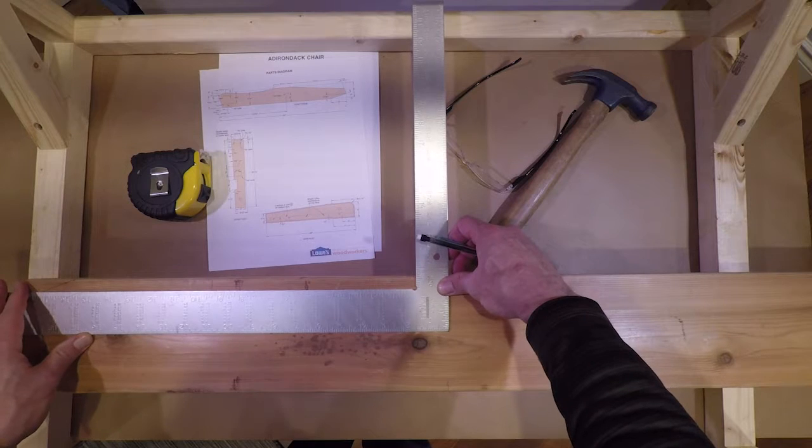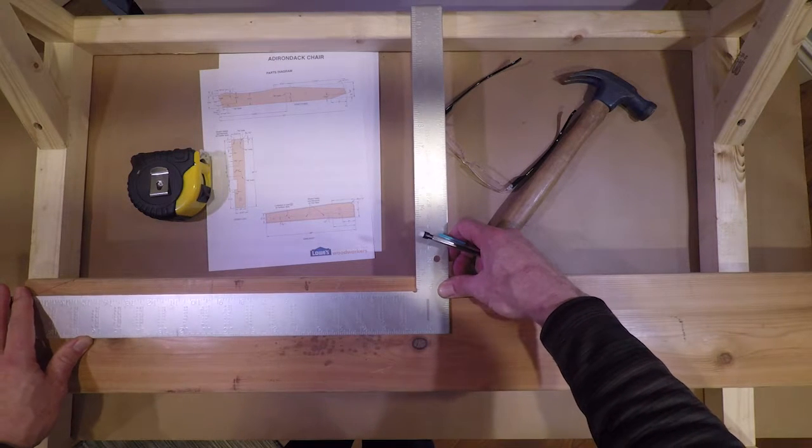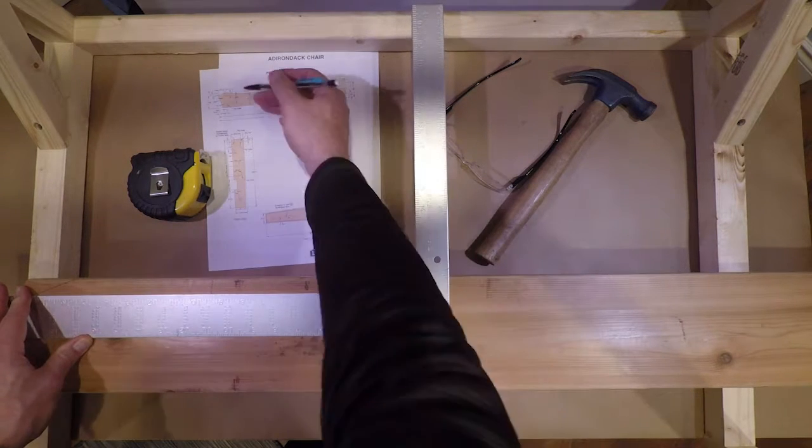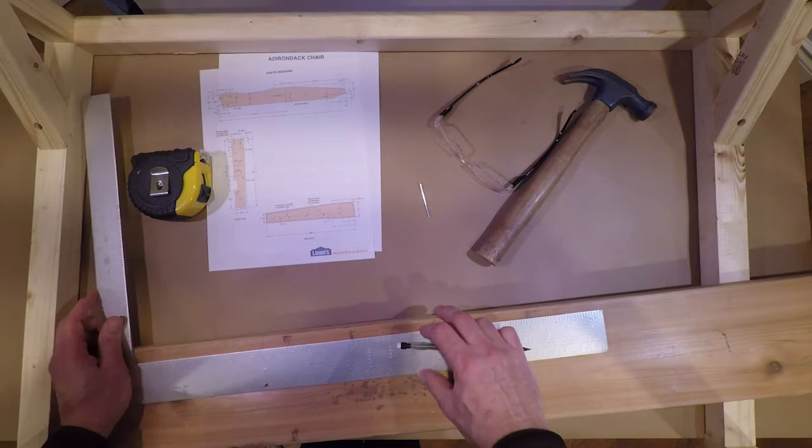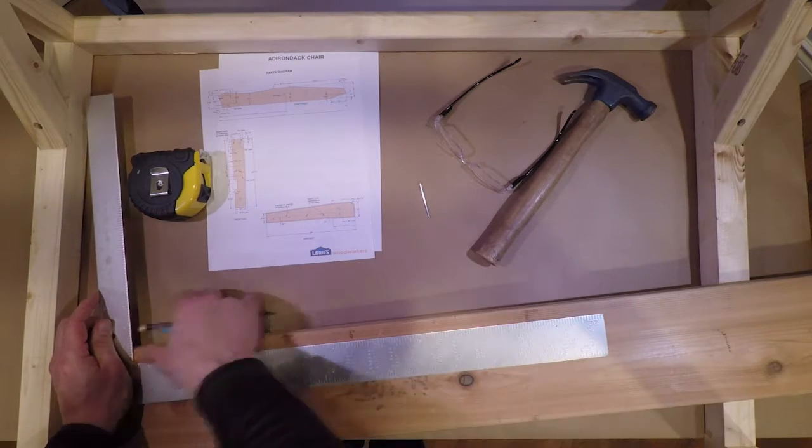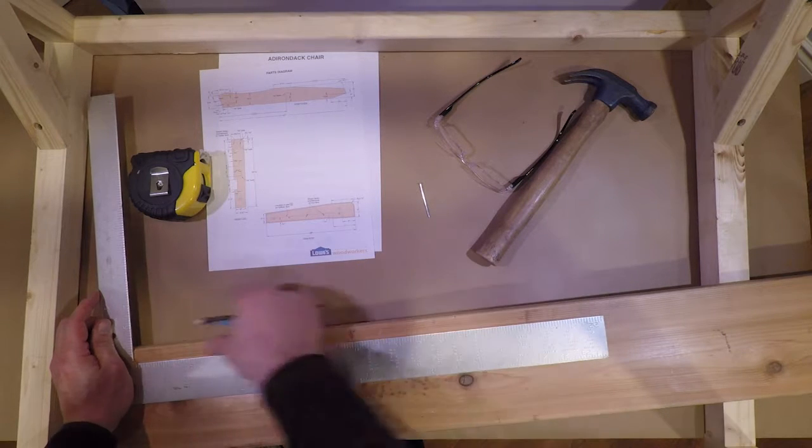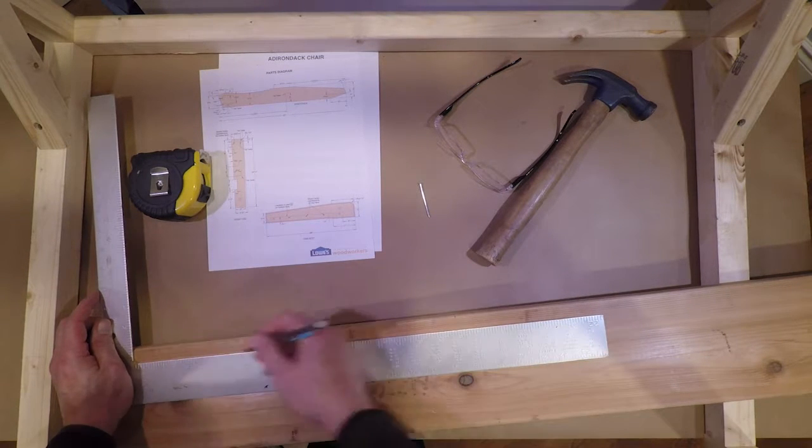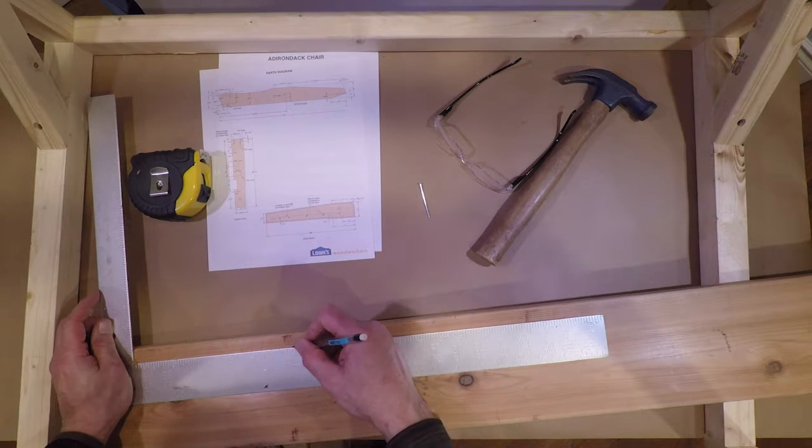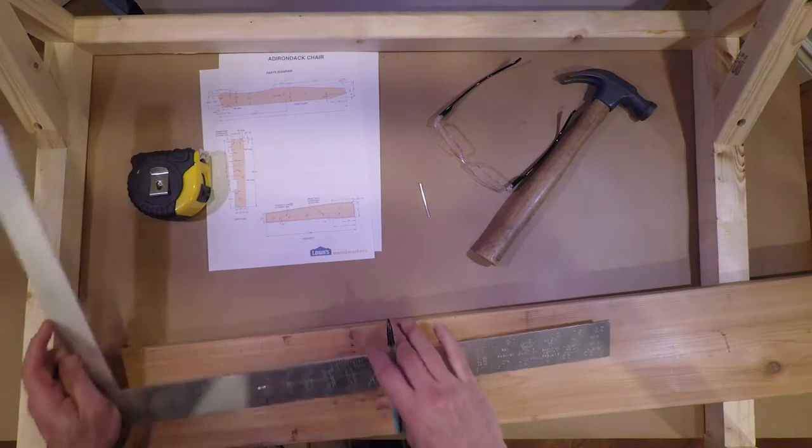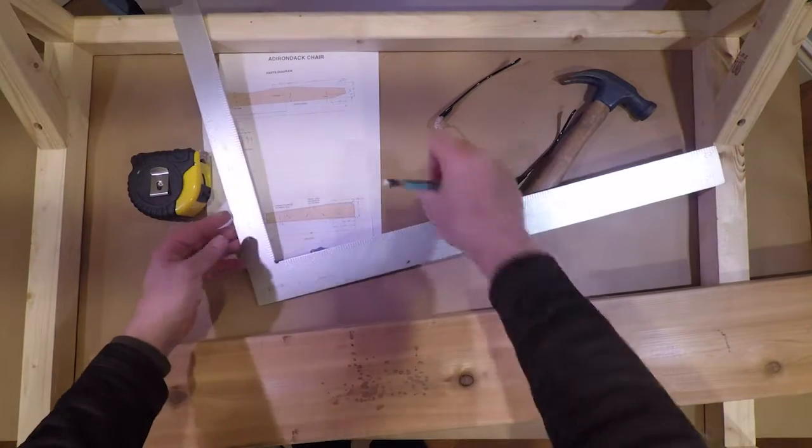We're going to go down seven and seven eighths. And we'll go down three quarters, as they did here. They went down three quarters. Down three quarters. I'm just going to estimate this to be close enough. And go over seven and seven eighths.